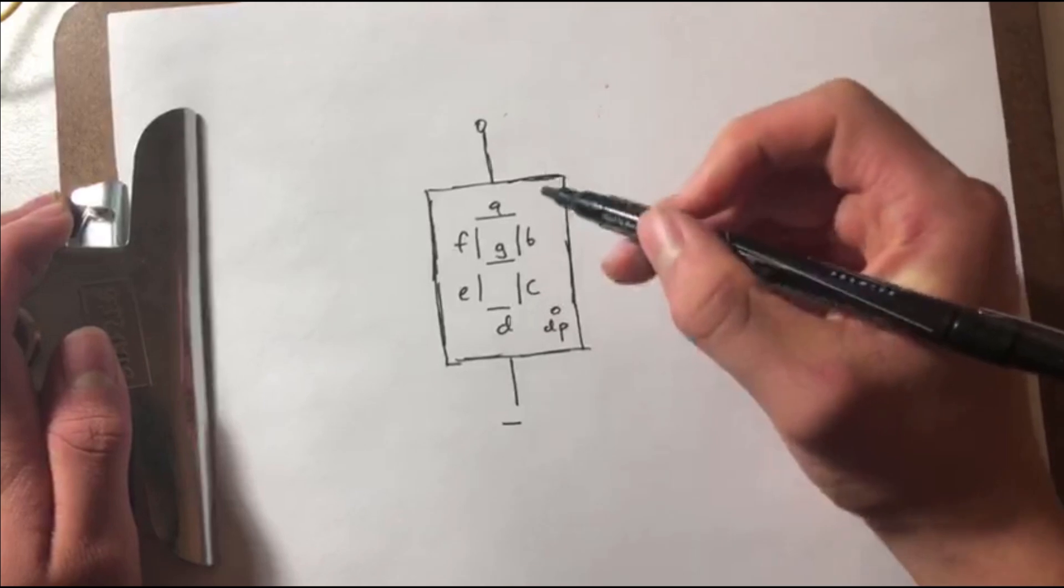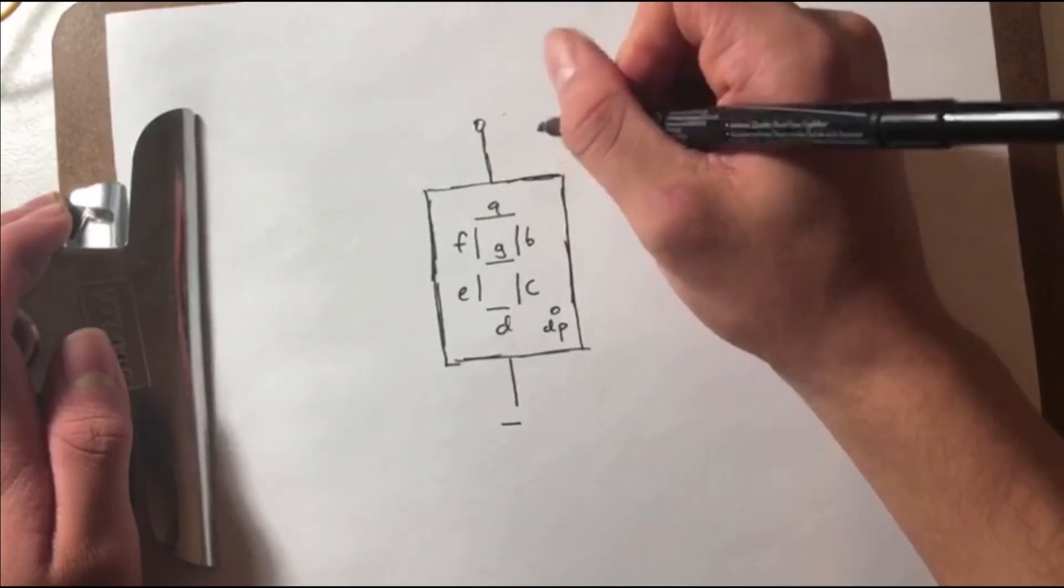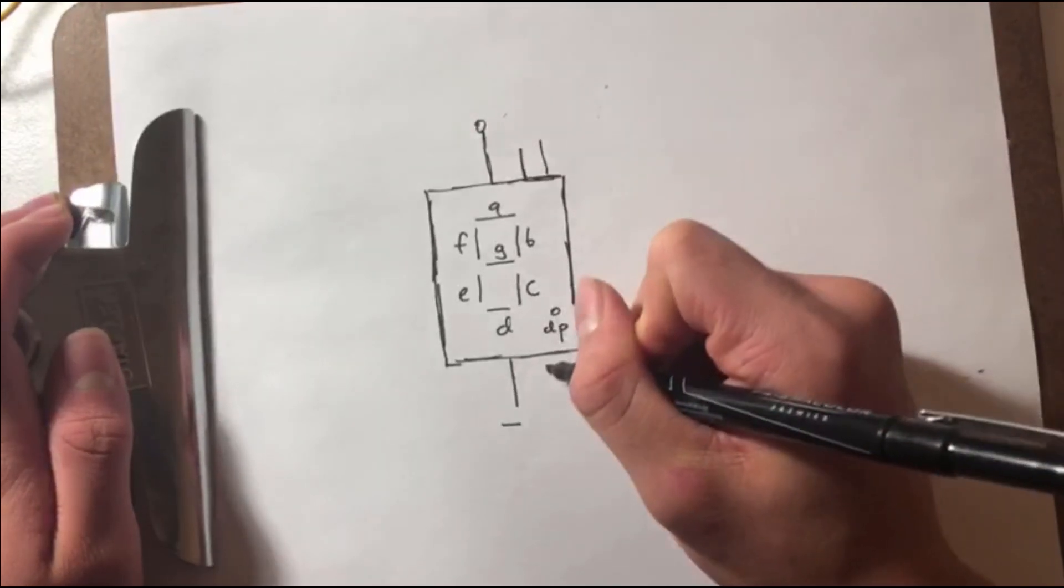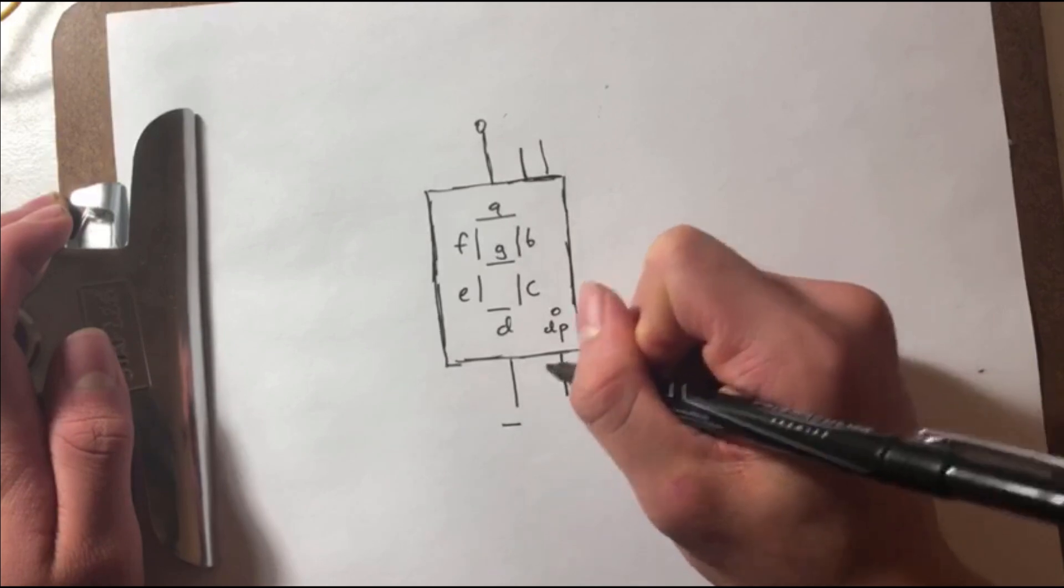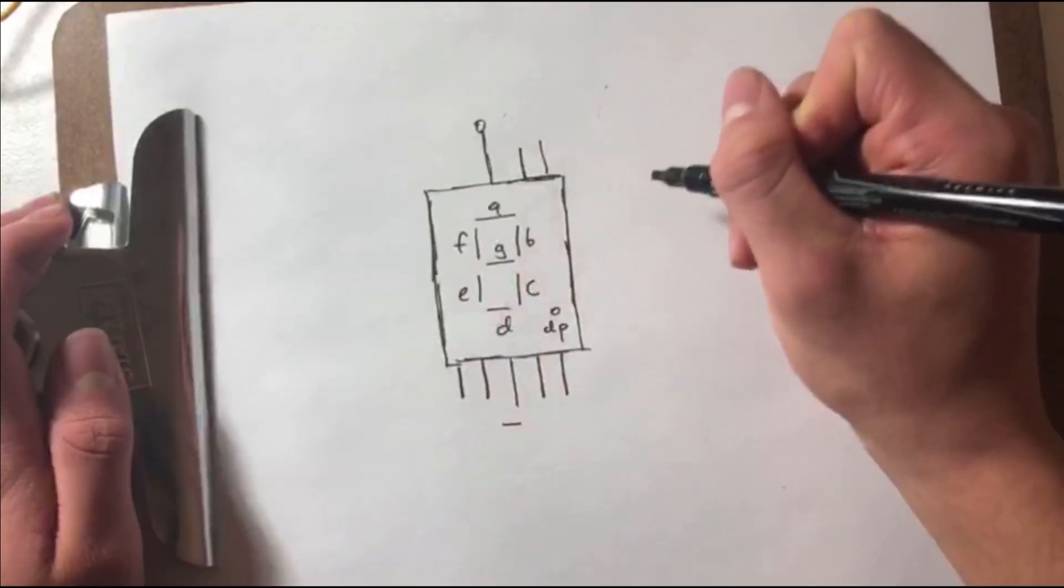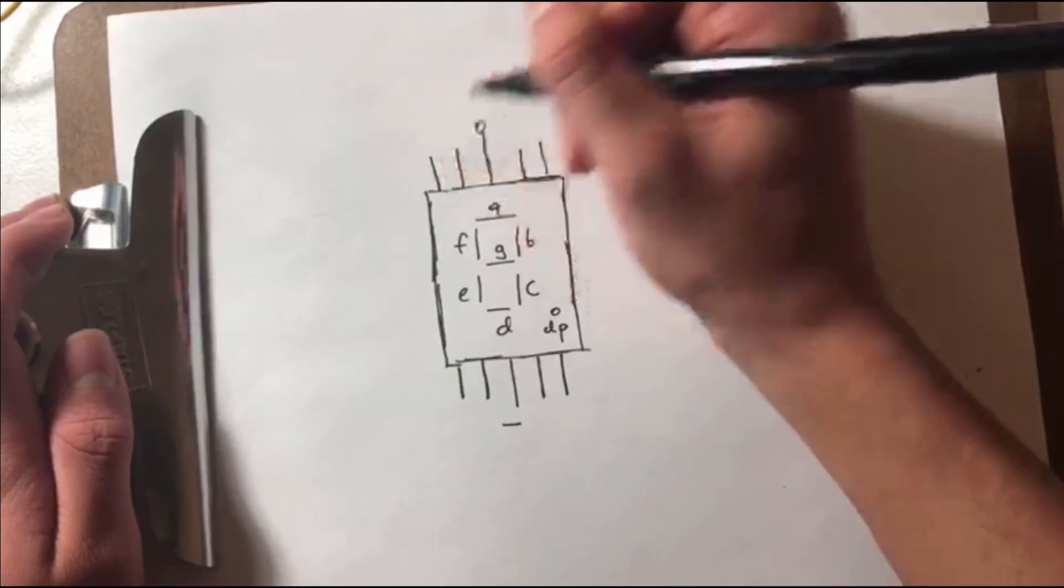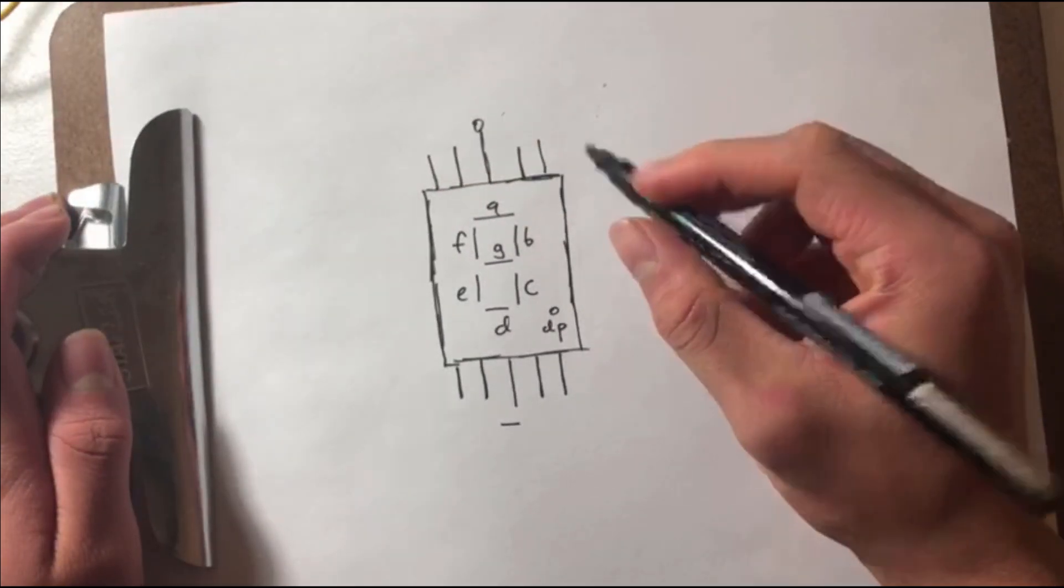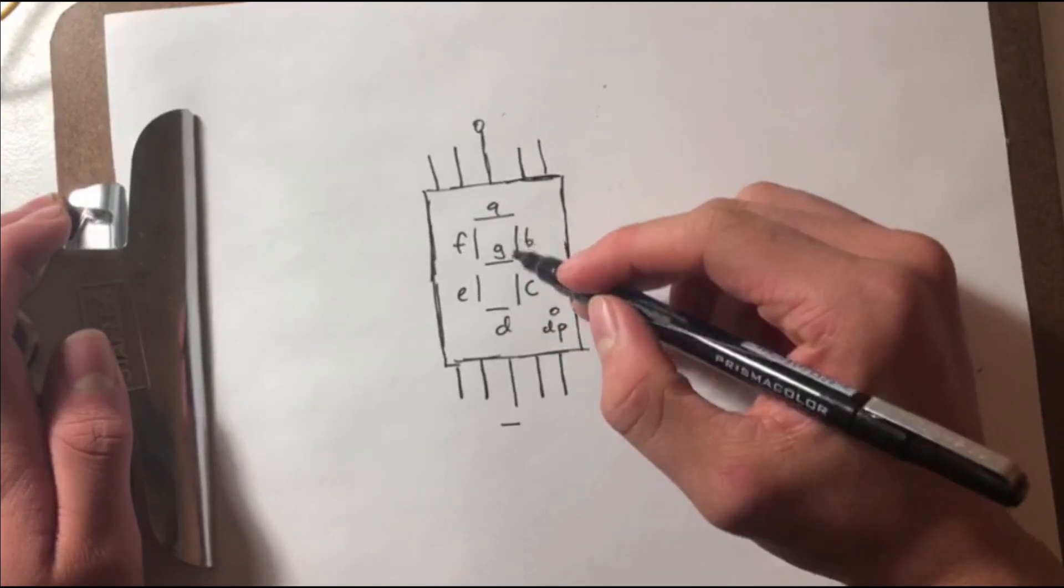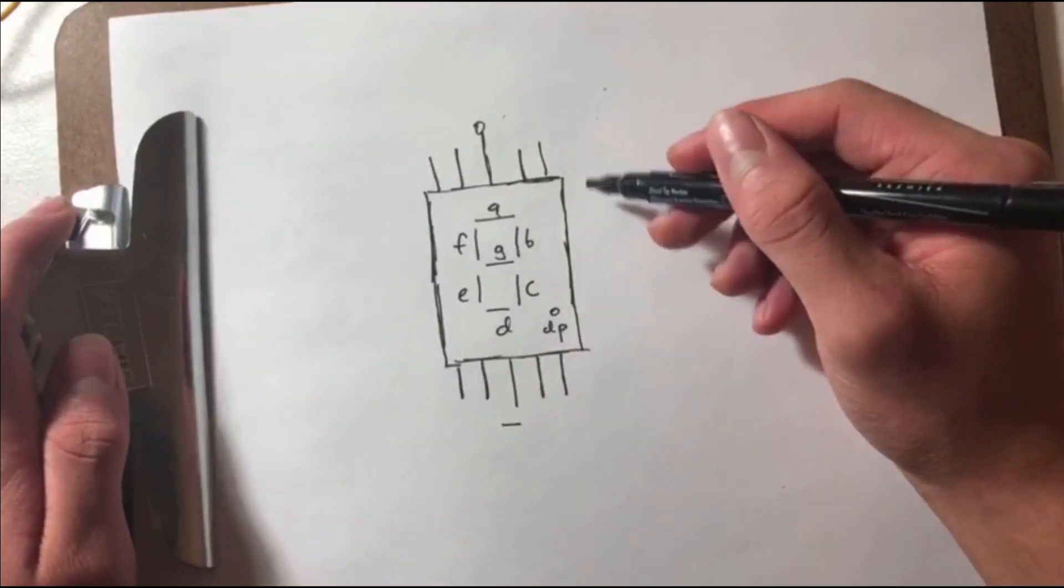And so what we did in our circuit is we grabbed a—so I'll just draw the various different pins. Here's B and A, decimal point, C, D, E, and here is F and G. And so each pin powers an individual segment, so I'm just explaining again so you guys can understand this better.